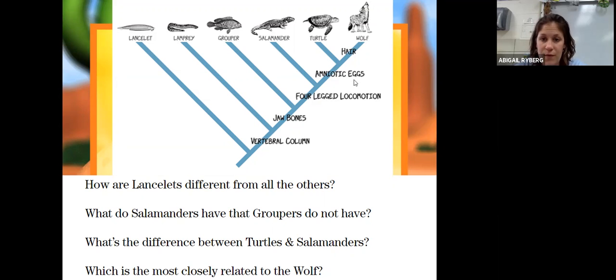What's the difference between turtles and salamanders? Well, salamanders do not have amniotic eggs. Which one is most closely related to the wolf? On these cladograms, typically you'll see that the ones that are physically closer together will be genetically closer together compared to these organisms. So in this case, with these traits, the turtle is more closely related to the wolf than the others.